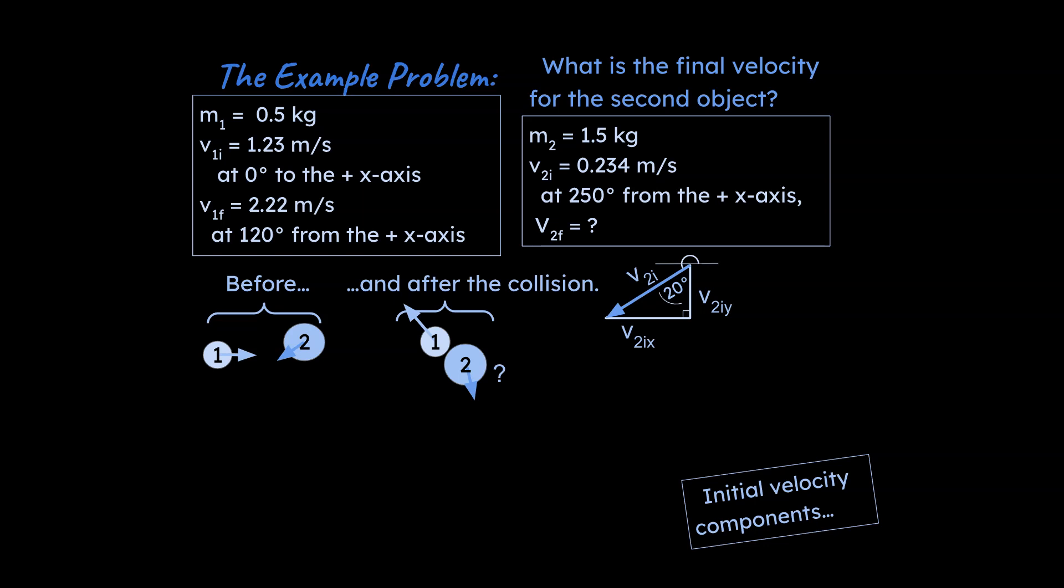So one of the first things we're going to do is we've got three vectors that we need to deal with and break up into components. So our v1 initial and our v2 initial and our v1 final we need to break up into all its components. Our initial velocity components for one, this is going to be easy because this is just completely in the x-axis. So this is 1.23 meters per second and this is 0 meters per second right here.